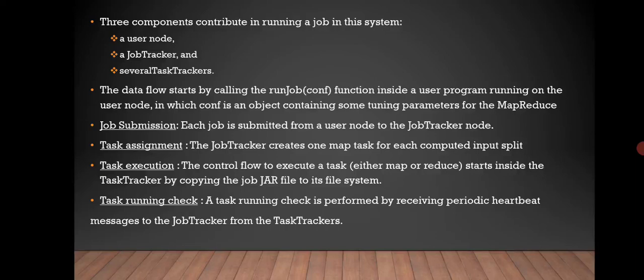The data flow starts by calling the run job function from the user program that runs on the user node, in which the job is an object containing some parameters for the MapReduce. Each job is submitted from the user node to the job tracker node. Task assignment: the job tracker creates one map task for each input split. Task execution is the control flow to execute a task which starts by copying the job jar file to the file system. Task running check is performed by receiving periodic heartbeat messages to the job tracker from the task trackers.